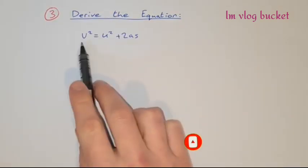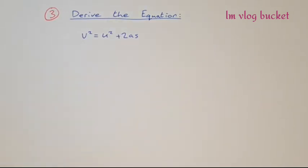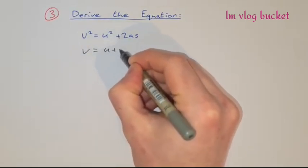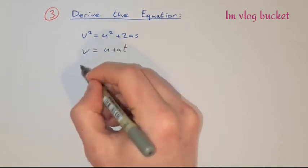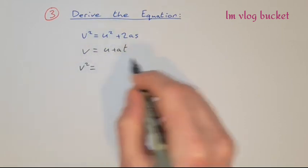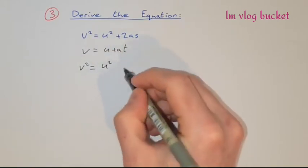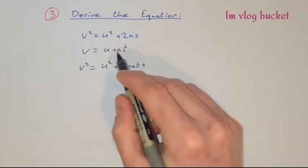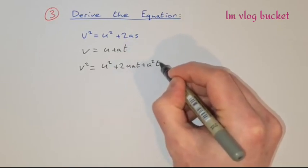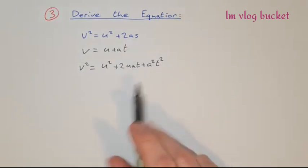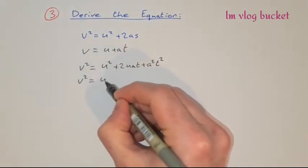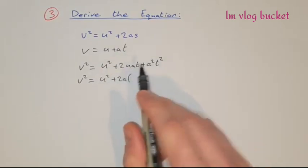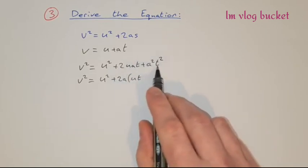We're now asked to derive v² = u² + 2as. To derive this one, we start with equation 1: v = u + at. We square both sides, so v² = (u + at)², which expands to u² + 2uat + a²t². On the right-hand side, we factor out 2a from the last two terms, leaving us with u² + 2a(ut + ½at²).